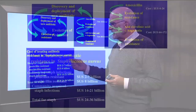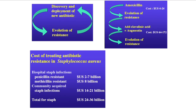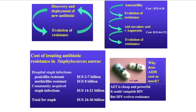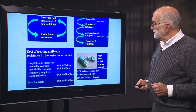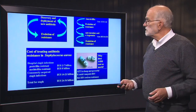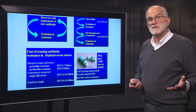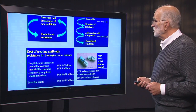The cost of treating antibiotic resistance for Staph A in hospital infections — when it was penicillin-resistant — was about $2 to $7 billion. When it became methicillin-resistant, it was about $8 billion. For community-acquired Staph infections it's about $14 to $21 billion, and the overall cost of treating Staph is somewhere between $25 and $35 billion a year. If we look at AIDS, the initial drug that was so effective, AZT, was something that HIV evolved resistance to very quickly. And so we are now dependent upon drug cocktails that cost on the order of $10,000 to $15,000 per year per patient. So resistance is expensive.